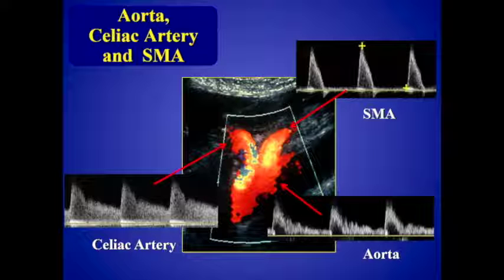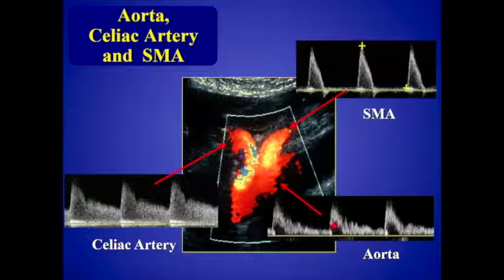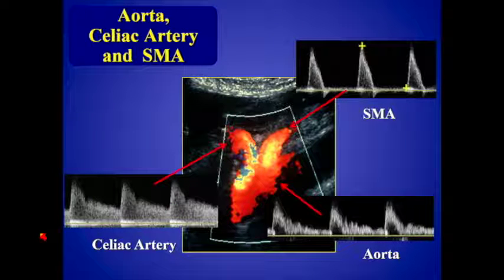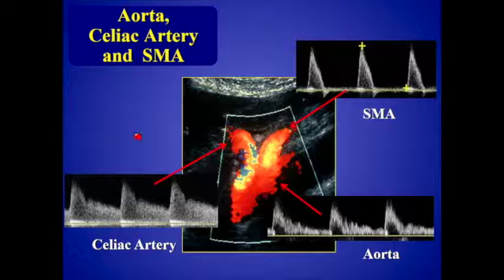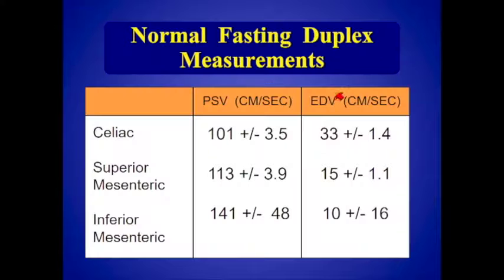The proximal abdominal aorta near the origin of the celiac has continuous forward flow throughout diastole, as expected since the celiac feeds the low-resistance organs of the liver and spleen. The superior mesenteric artery typically has little to no flow in diastole in the fasting state. Normal fasting measurements are typically around 100 centimeters per second. The flow velocities in the celiac and mesenteric arteries should closely resemble the velocities in the abdominal aorta — close to a one-to-one ratio — around 100 cm/s for the celiac and SMA, maybe a little higher for the IMA.